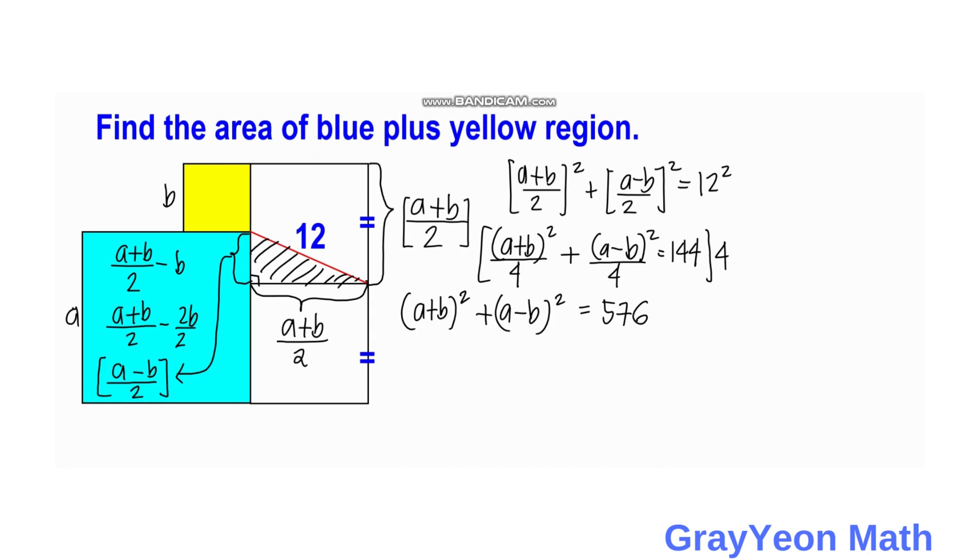So next is we square this binomial. So we have A squared plus 2AB plus B squared, then plus A squared minus 2AB plus B squared is equal to 576. Then we simply cancel this 2AB and negative 2AB. And there we have 2A squared plus 2B squared is equal to 576.